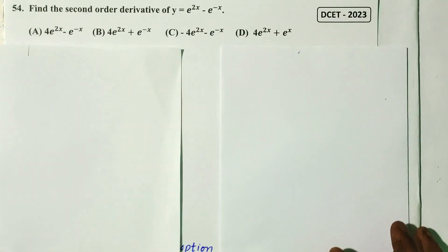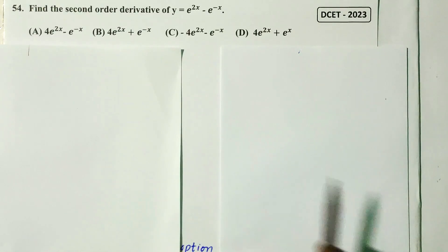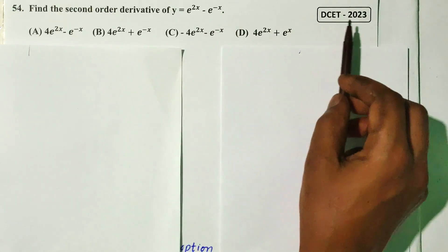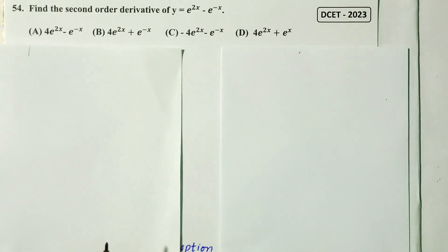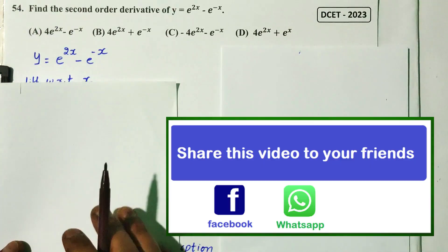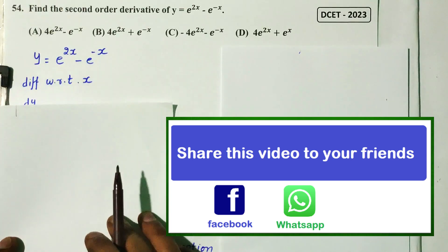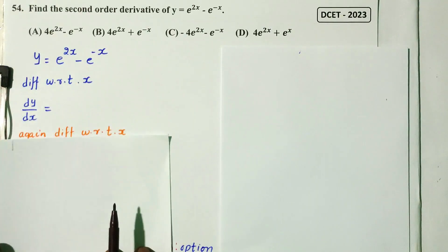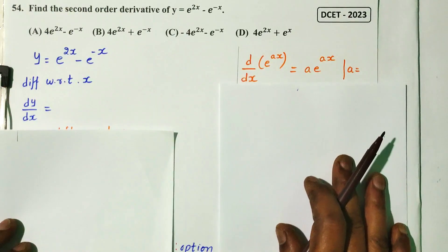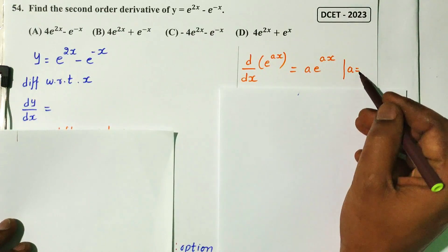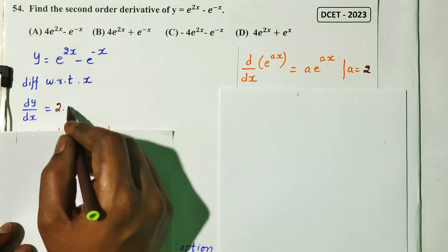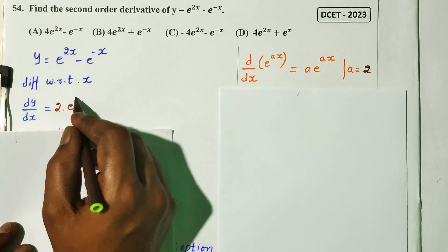Question number 54. Find the second order derivative of y = e^(2x) minus e^(-x) — DCT 2023 question. First differentiate: dy/dx of e^(2x) gives 2e^(2x), using the formula a times e^(ax).